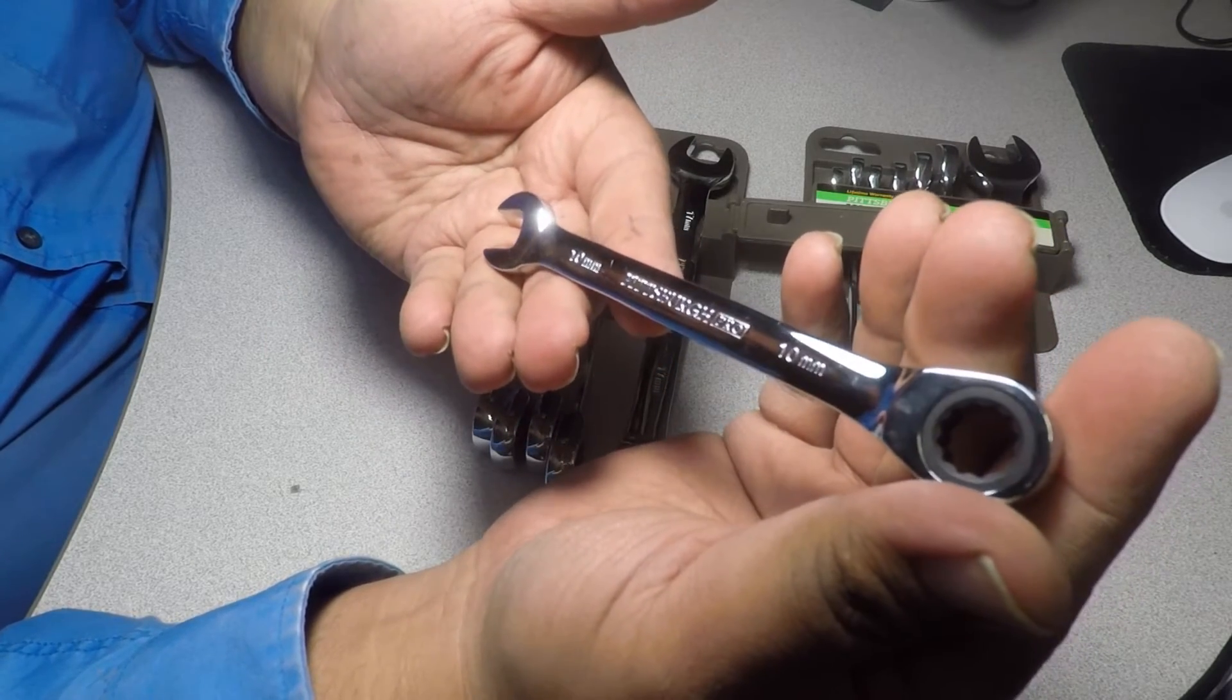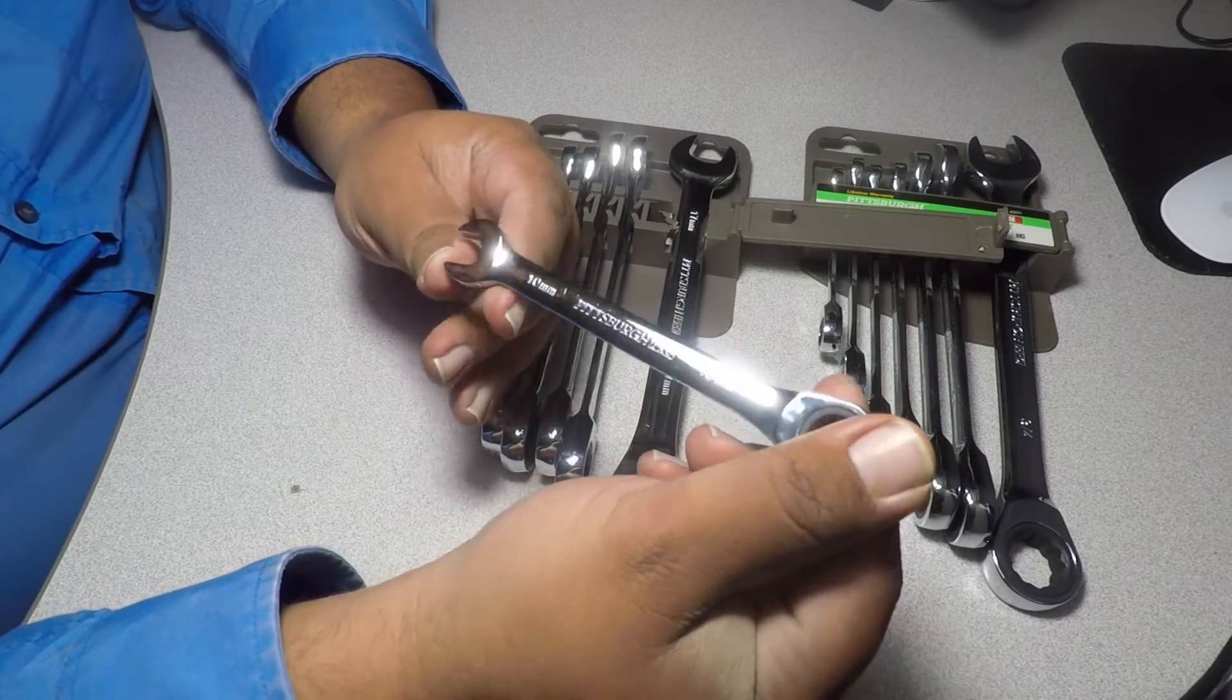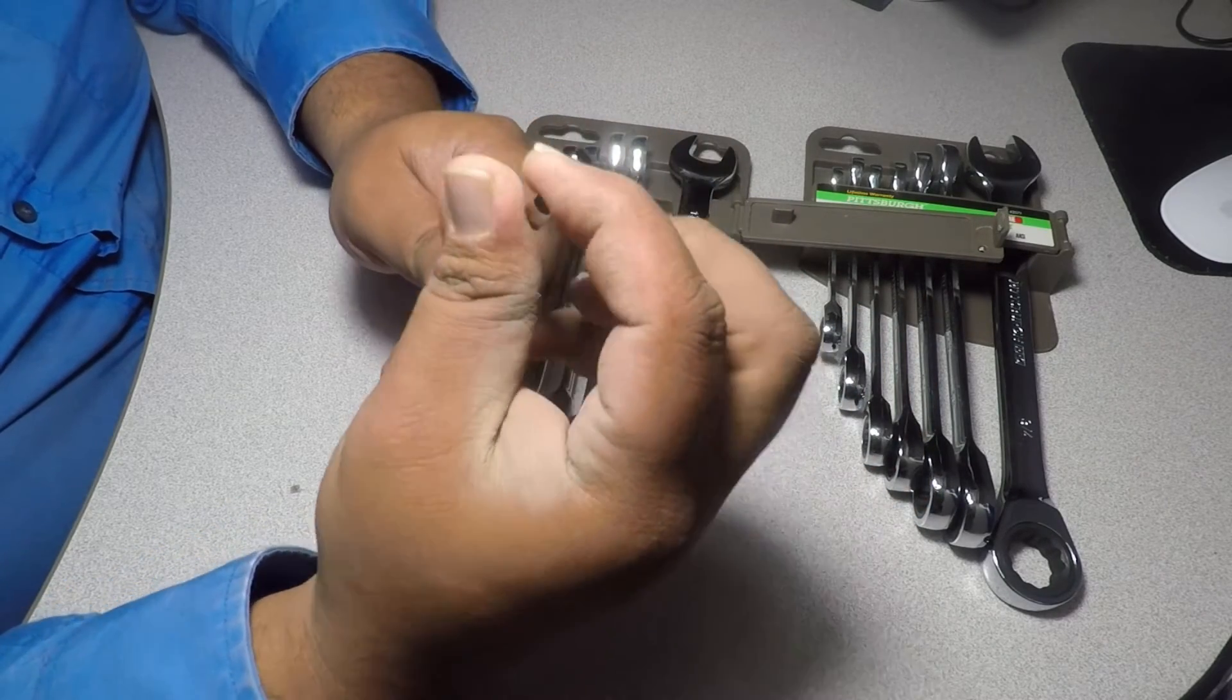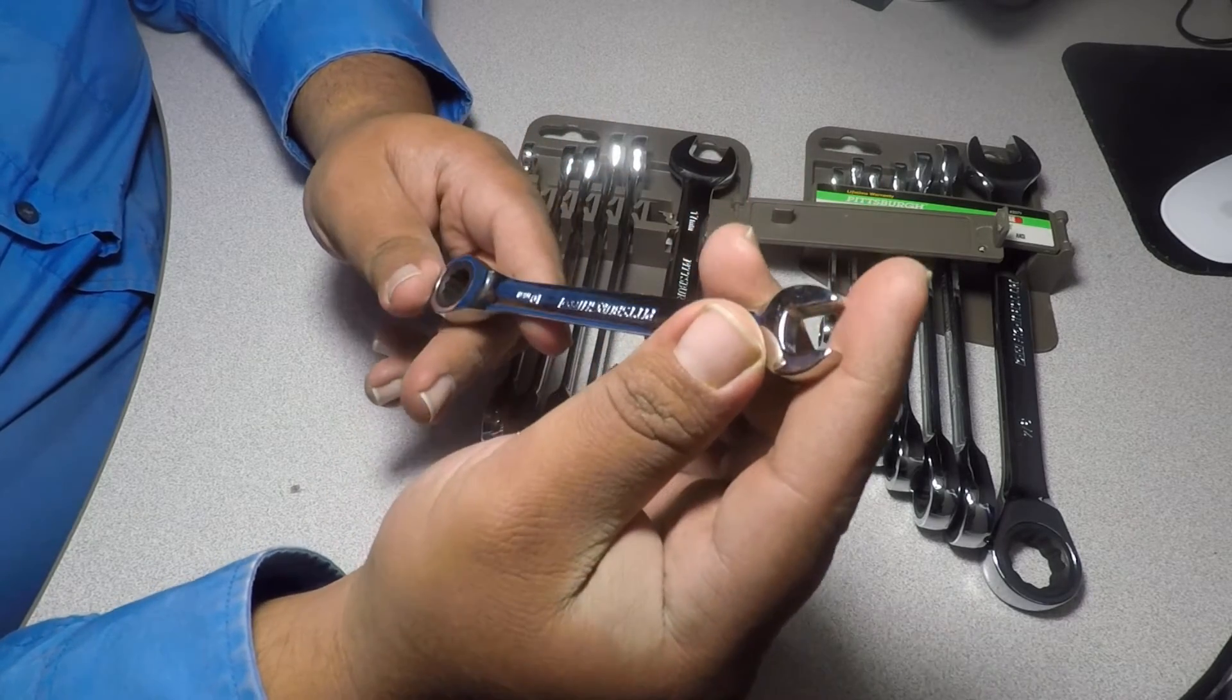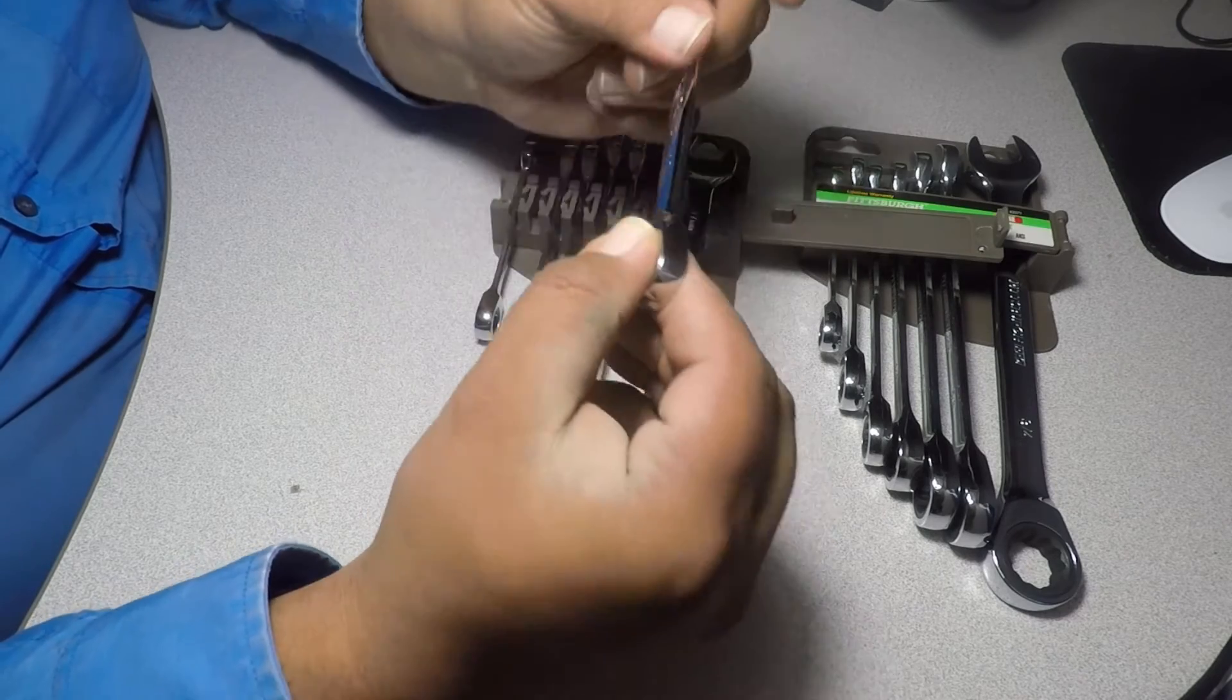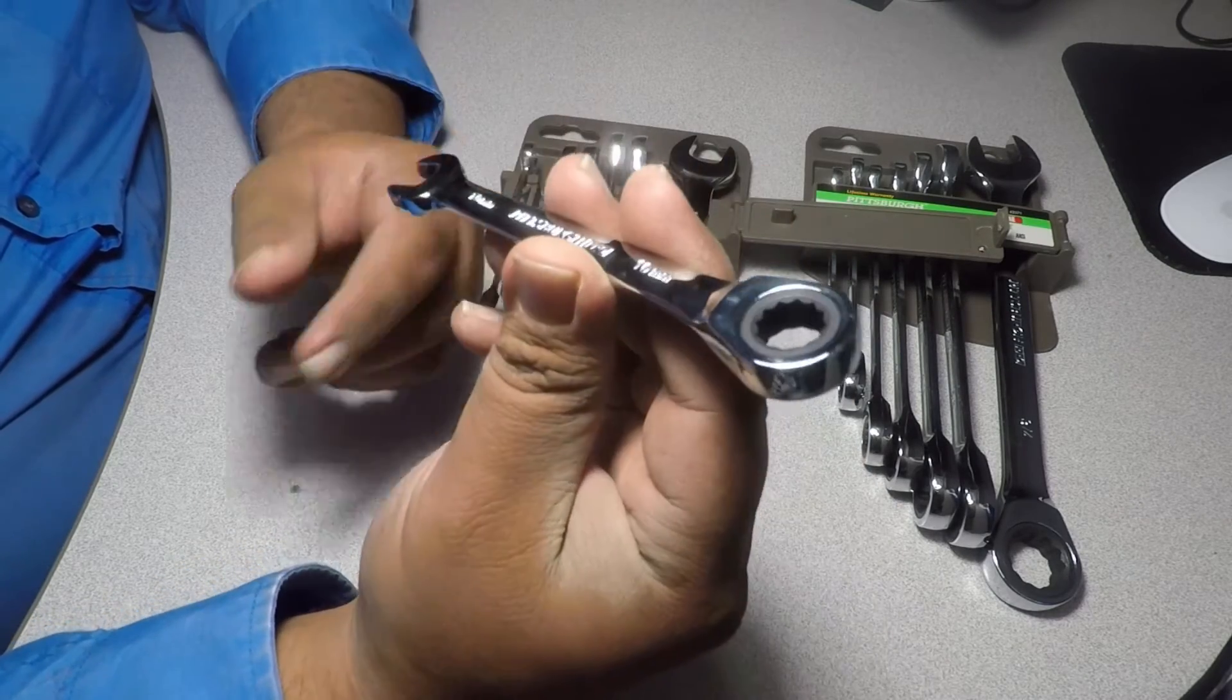This was the 10 millimeter. Very nice chrome finish, I have to say. All the edges are nice and smooth, no burrs, no nothing sticking out. The ratcheting part, it's real smooth.